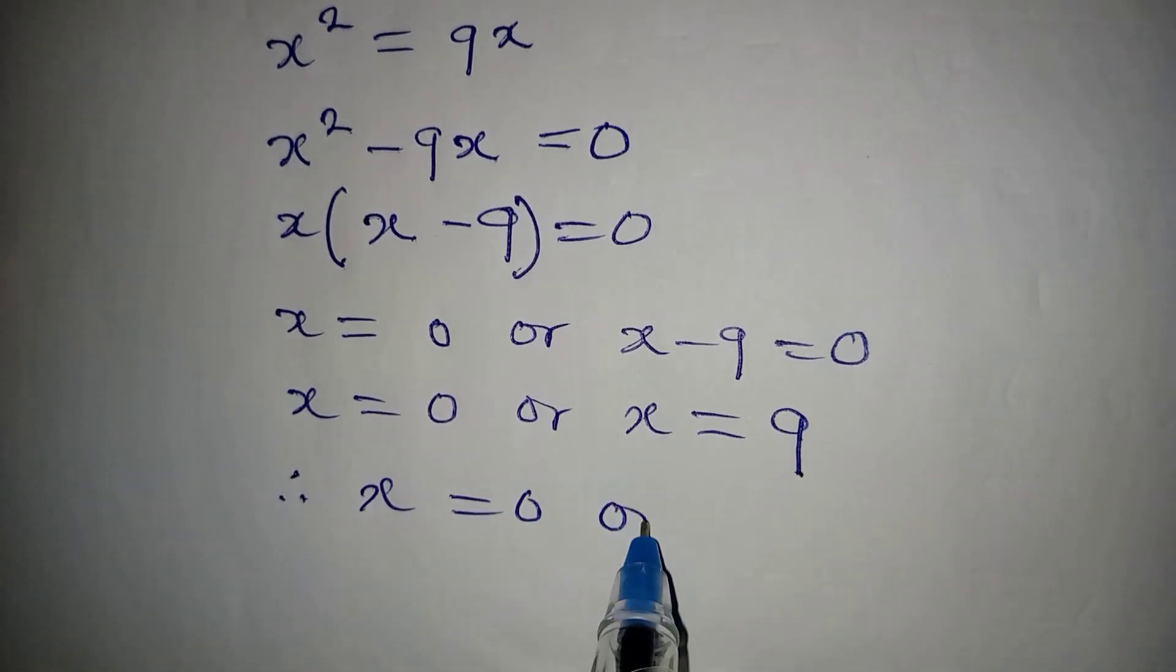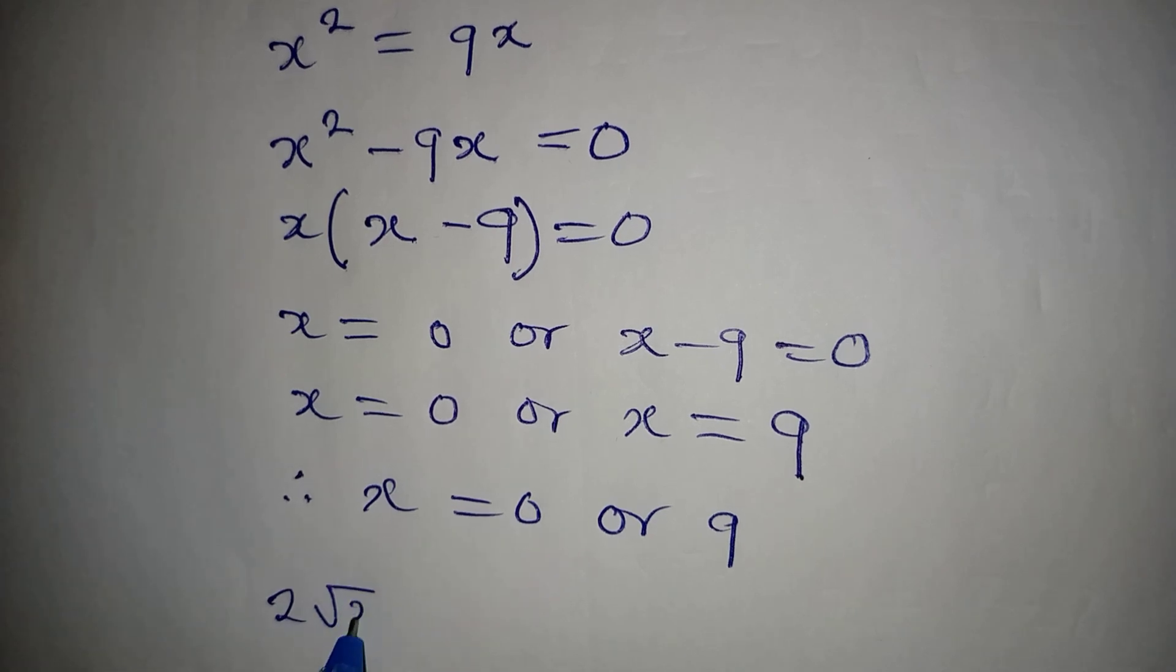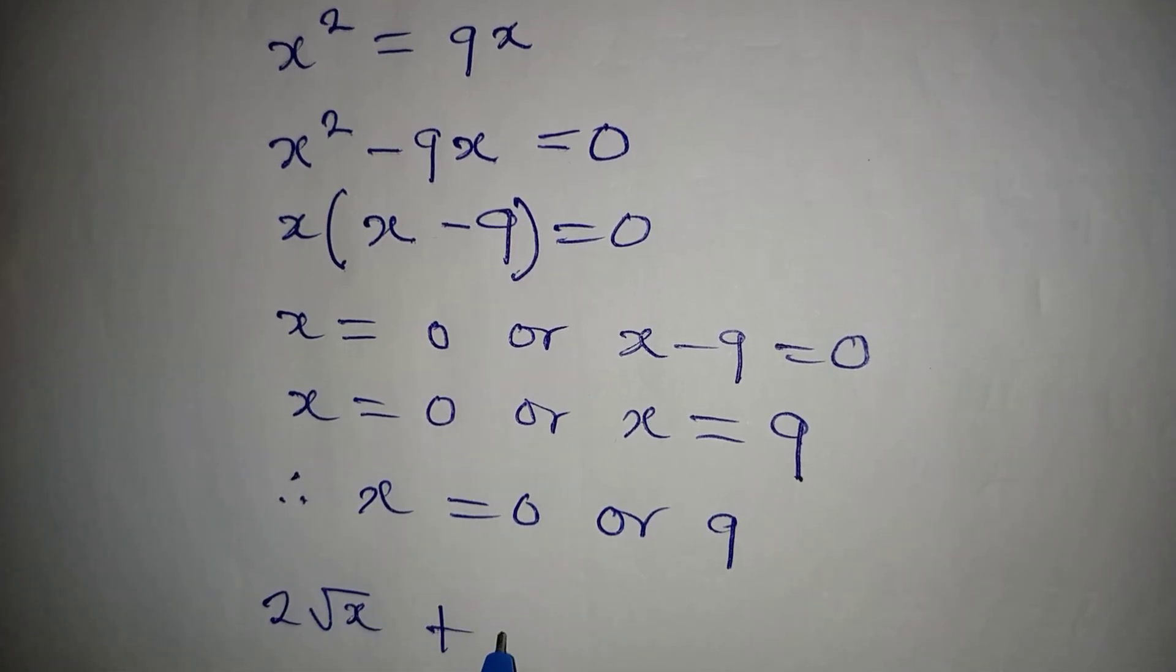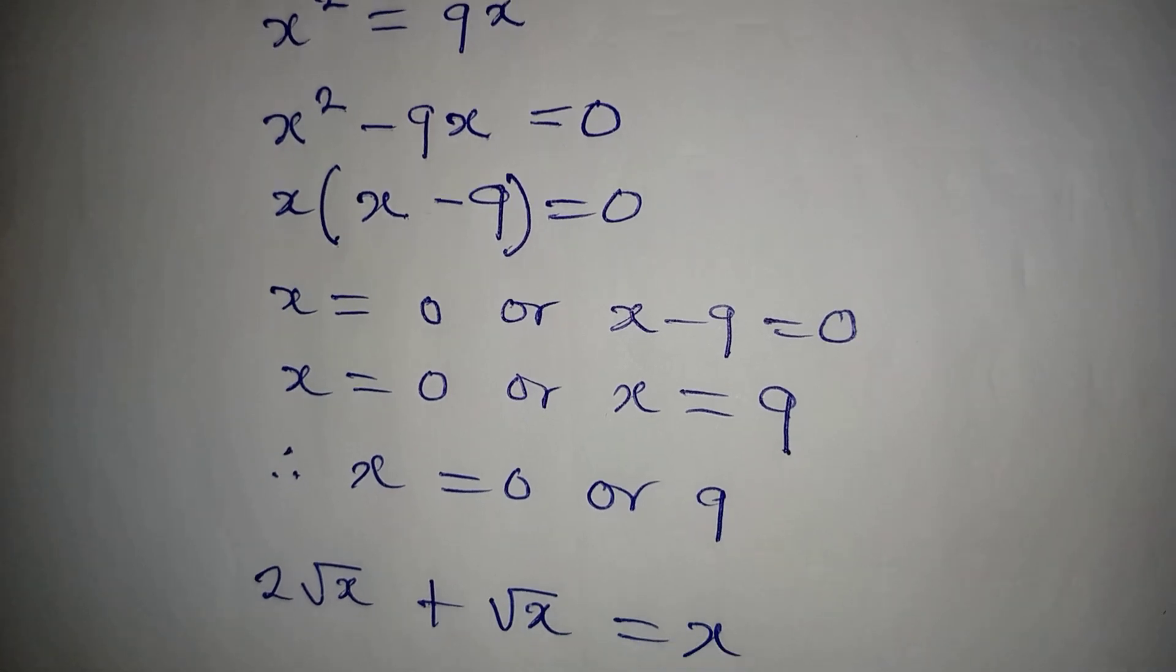But the original equation is 2√x + √x = x. Now if you put in the first value of x...